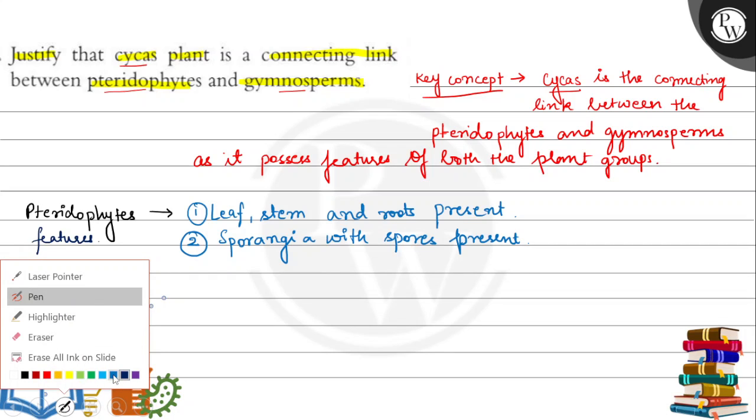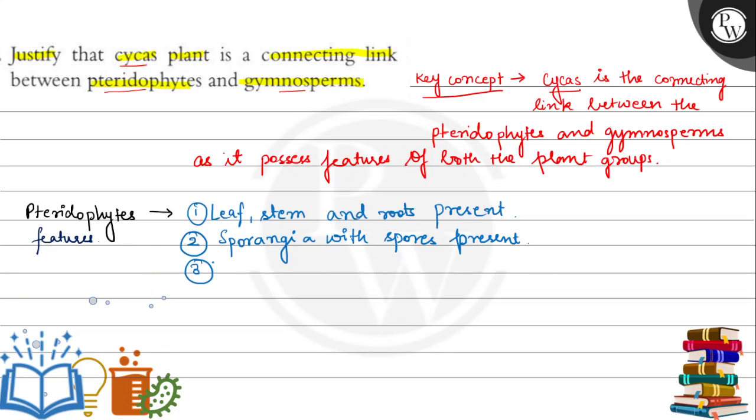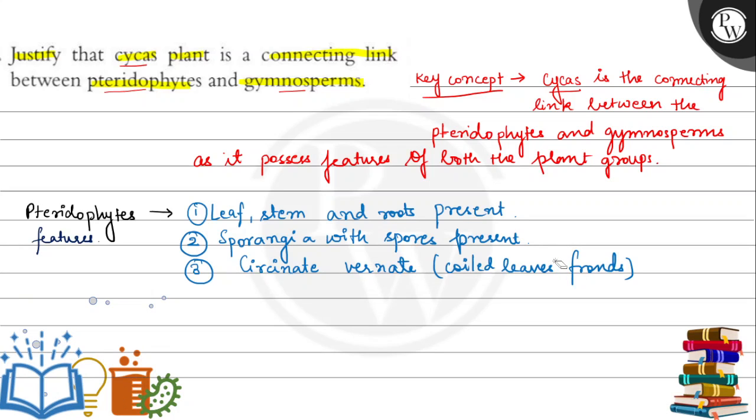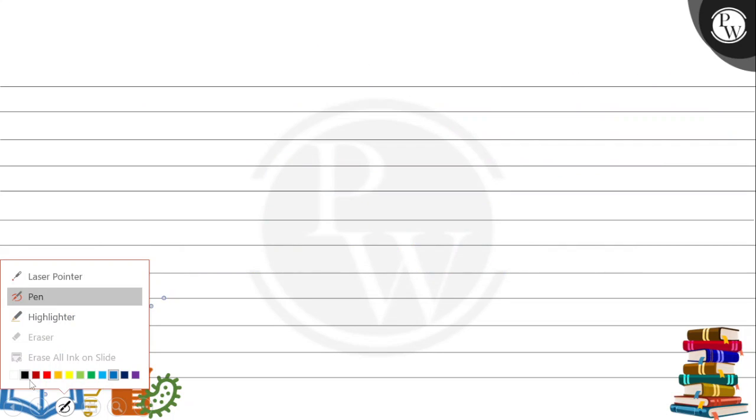Next feature is circinate vernation. Iska kya matlab hai? Jis tarikhe se pteridophytes me coiled leaves hooti hai, us tarikhe se hi cycas me bhi coiled leaves ya fronds hote hai. Thik hai bachchou? So, pteridophytes me joh tip hooti hai, woh coiled kar jati hai. Usi tarikhe se, cycas me bhi joh tip hooti hai, woh coiled kar jati hai leaf ki. Yeh ther pteridophyte features.